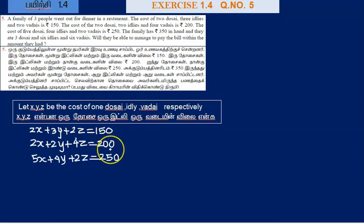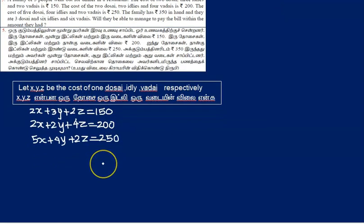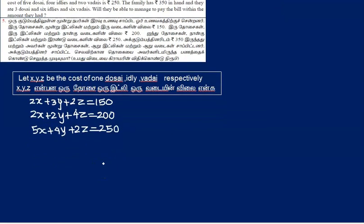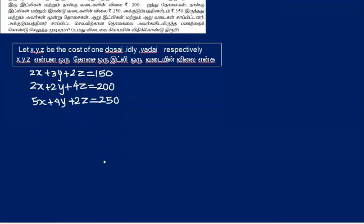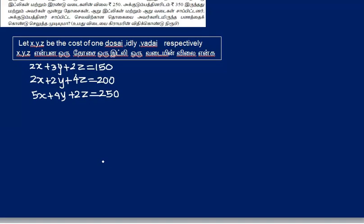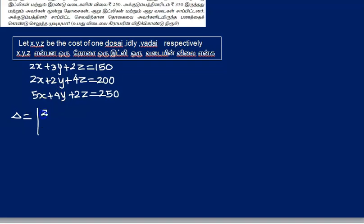We use Cramer's rule to find the xyz values. By Cramer's rule, delta equals the coefficient determinant. The coefficient matrix is: row 1: 2, 3, 2; row 2: 2, 2, 4; row 3: 5, 4, 2.